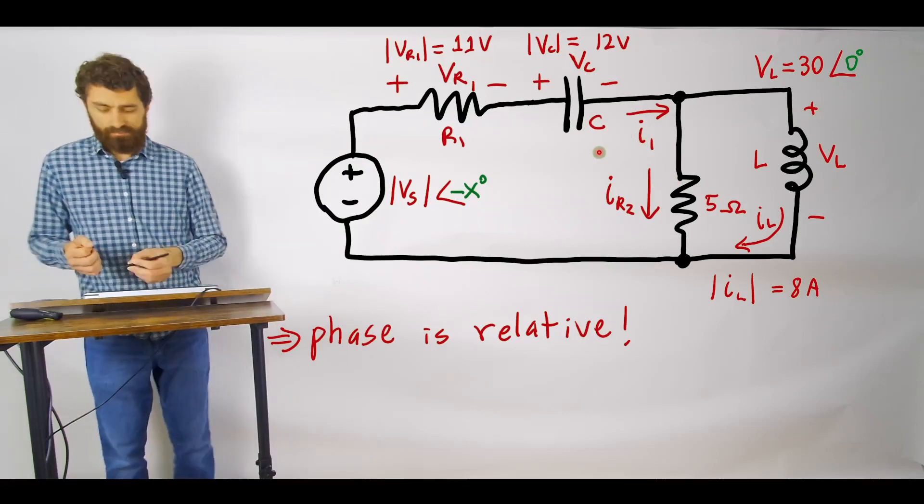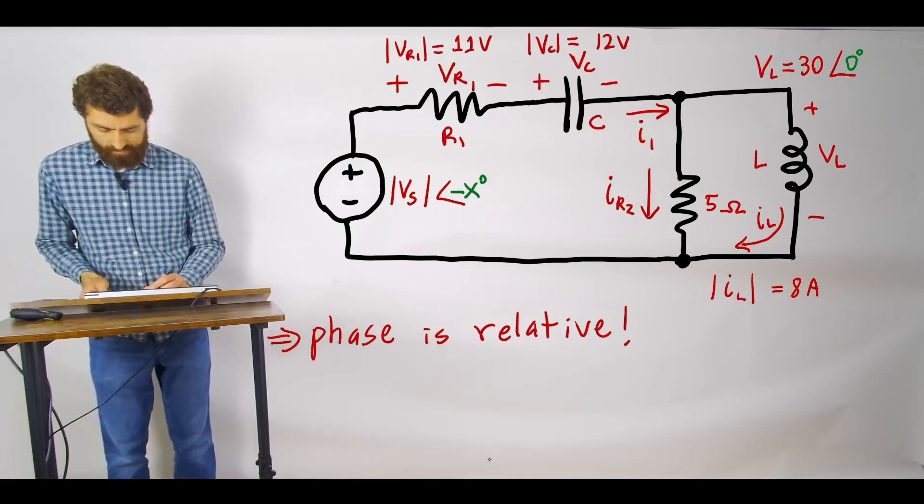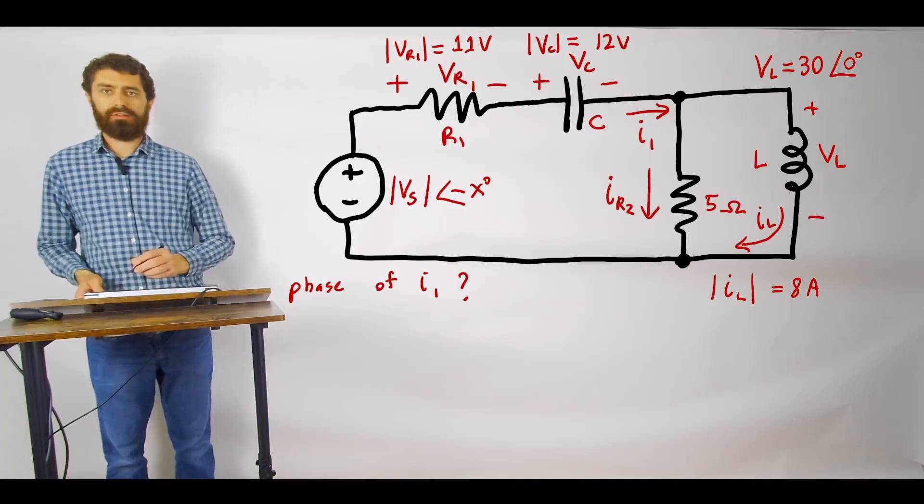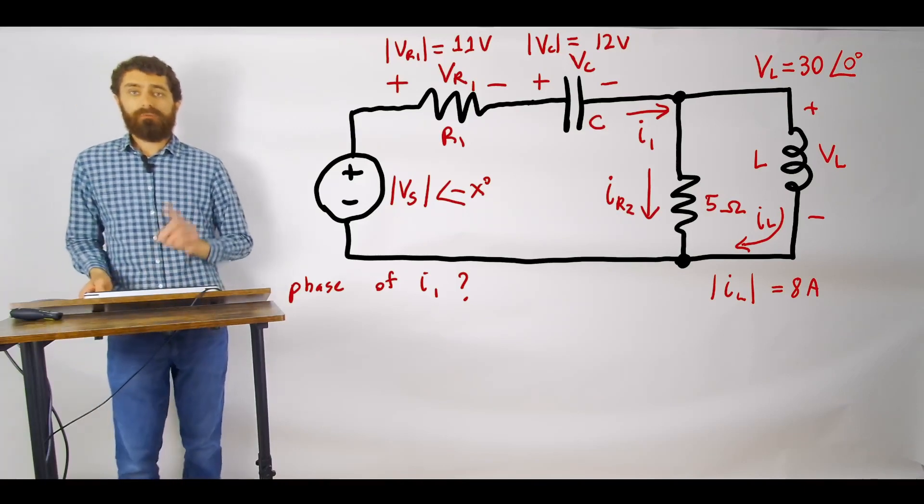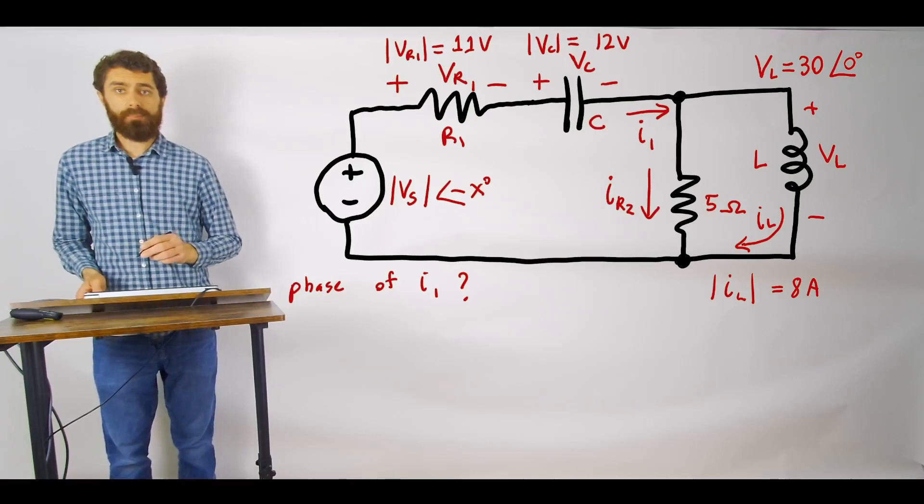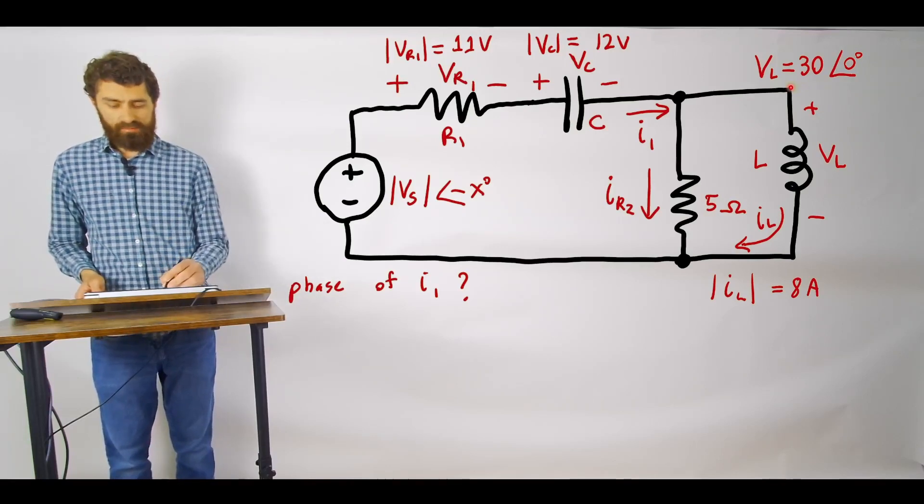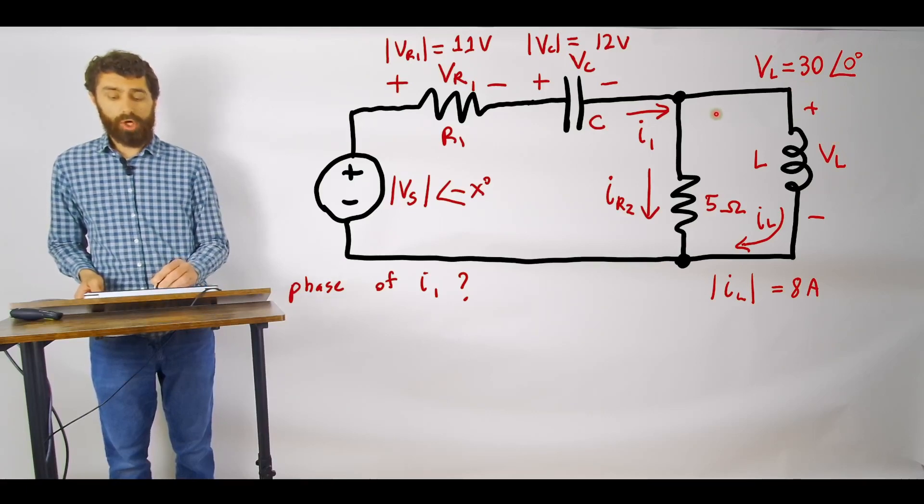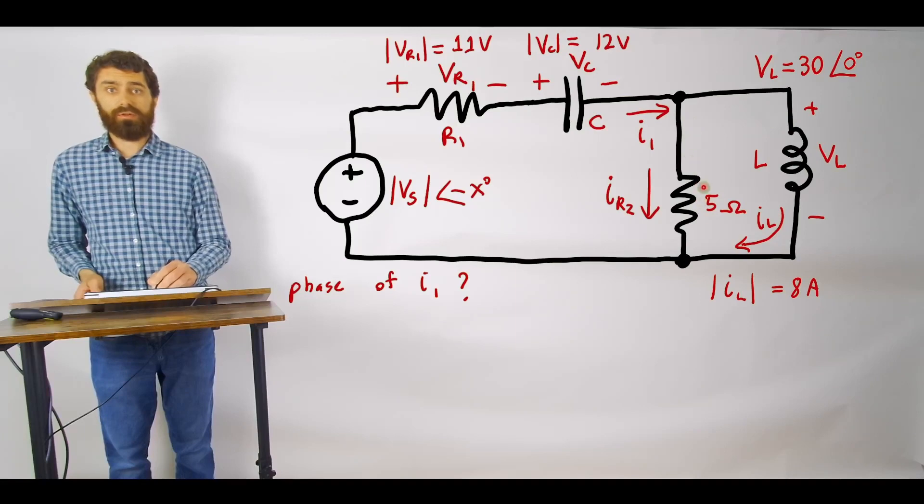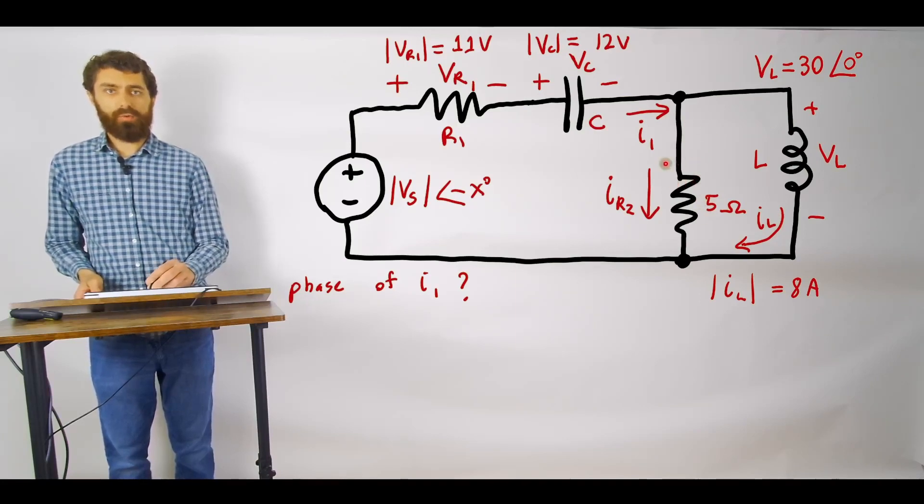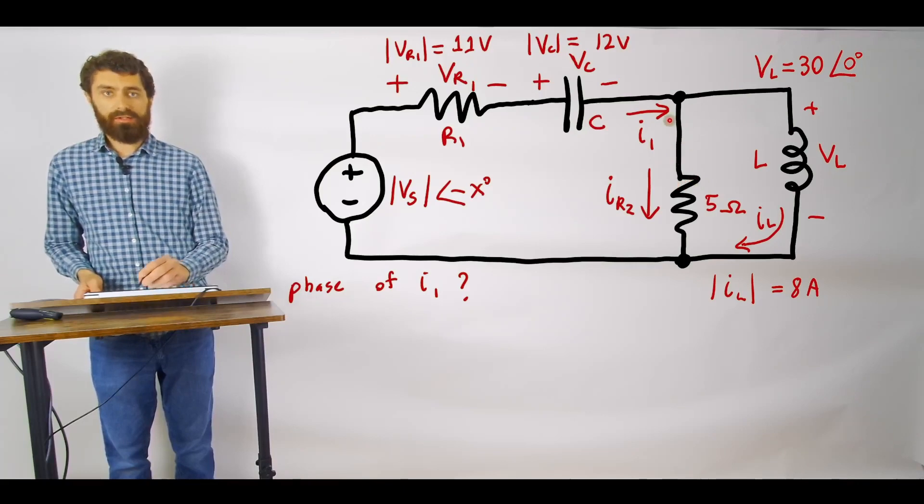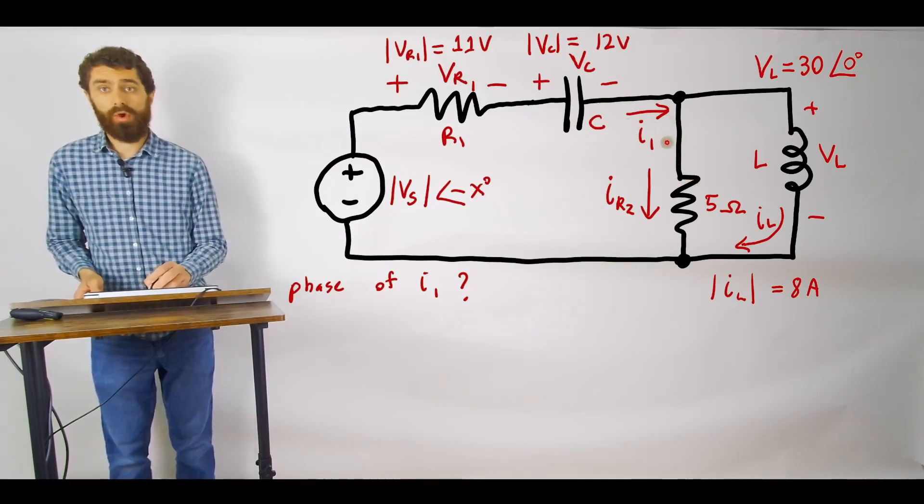So let's go ahead and solve for the phase of I1. First thing that I want you to notice is that here we're given the voltage and phase across the inductor which means that we should be able to find the current through this and its phase angle through the inductor. And also if we know the voltage across this resistor we should be able to know its phase angle as well and magnitude.